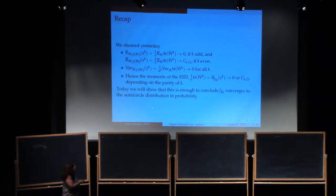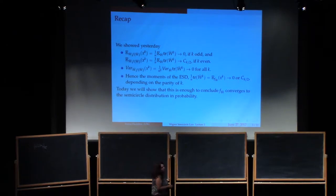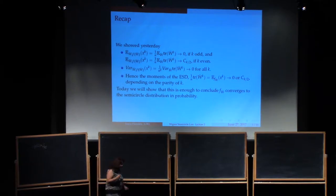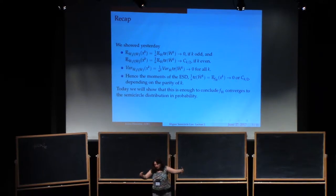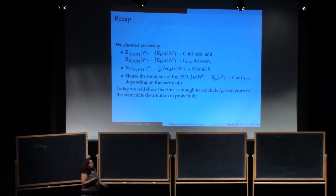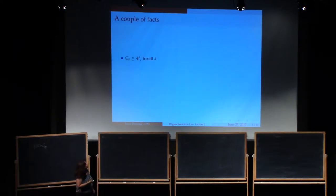Today we will show that because the moments are concentrated, F_{W-bar} itself converges weakly in probability to the semicircle law. We'll do this by a combination of Weierstrass approximation and a bounding argument — specifically, we will bound the probability that the eigenvalues of the matrix spill over some compact set.